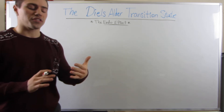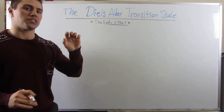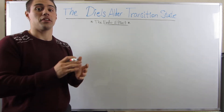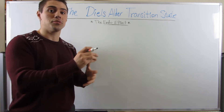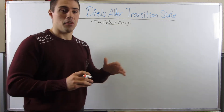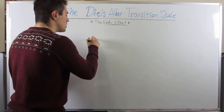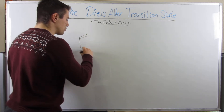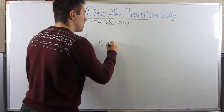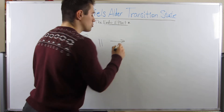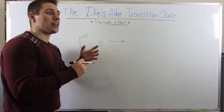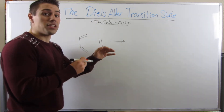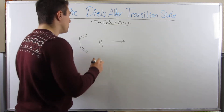I promise it will justify why out groups get the same stereochemistry as out groups, and in groups get the same stereochemistry as in groups. It completely justifies that. So let's start off. I'm going to draw a Diels-Alder reaction for you. We'll complete the reaction, then draw the transition state, and then I'll explain why the transition state looks the way it does and it will explain the in and out rule.